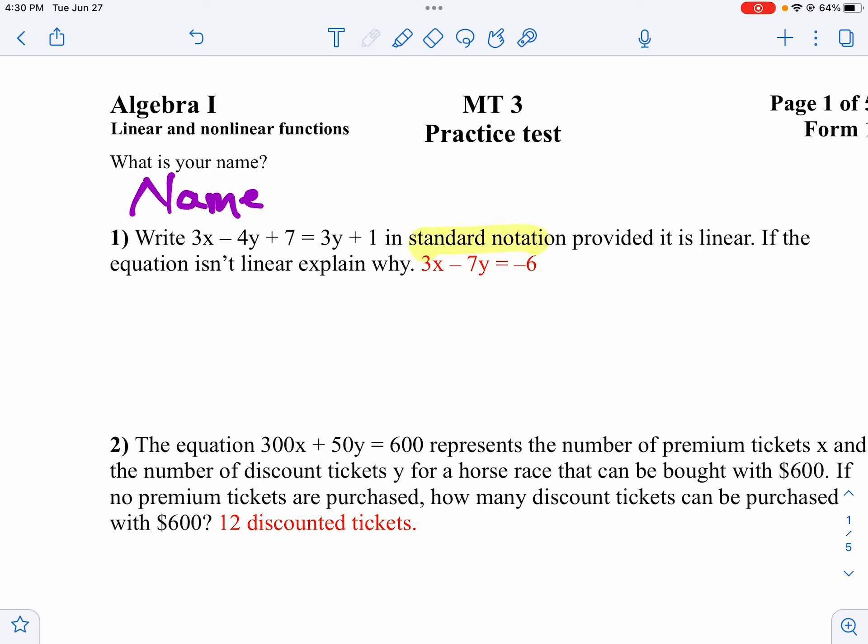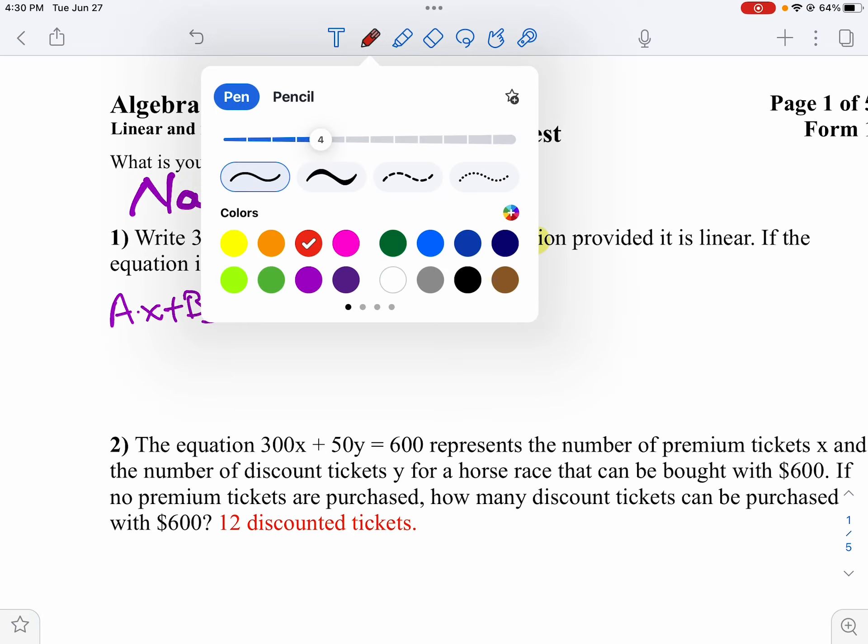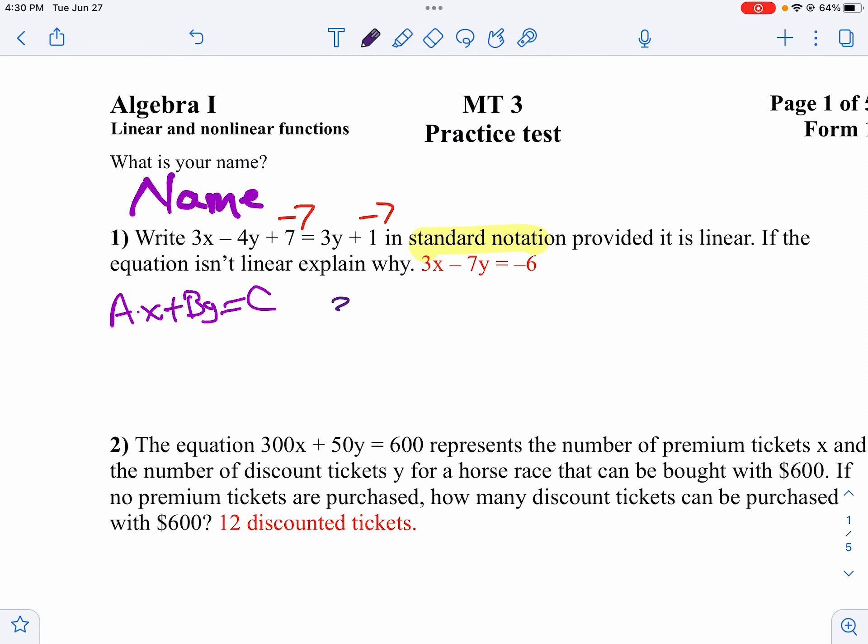That means it's got to be in the form of AX plus BY equals C. That means I want all my X's on one side, all my Y's on the same side, and I want the X to be positive. So what I think I'll do on my equation here is let's subtract 7 from both sides because I want the numbers all over on the opposite side.